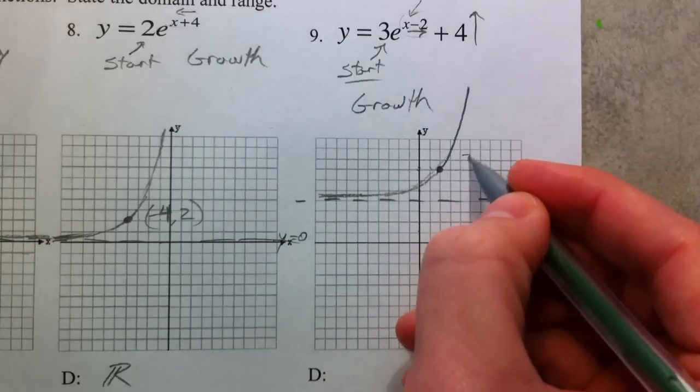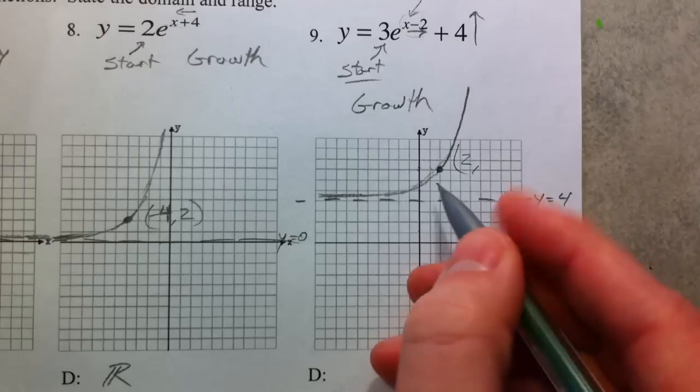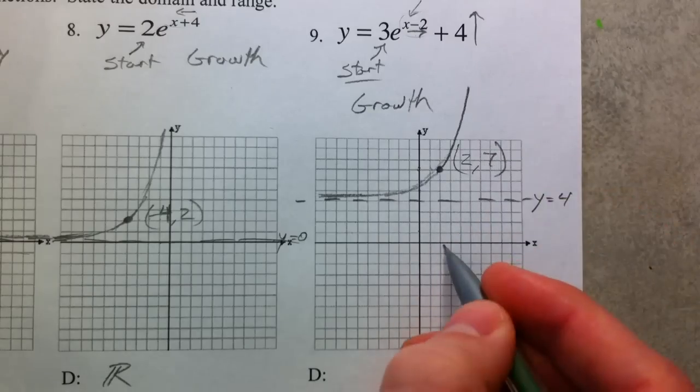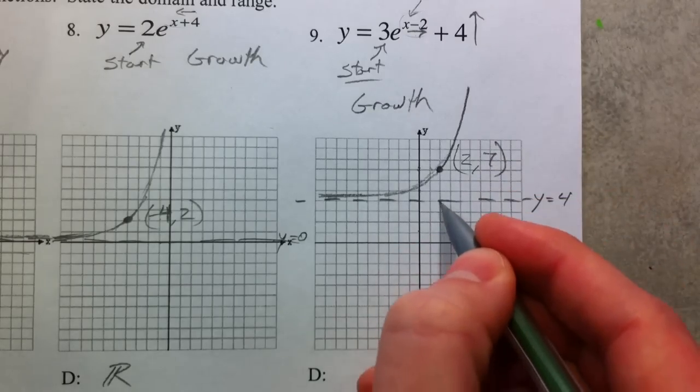At this point, it's 2 to the right and up 7, 1, 2, 3, 4, 5, 6, 7.